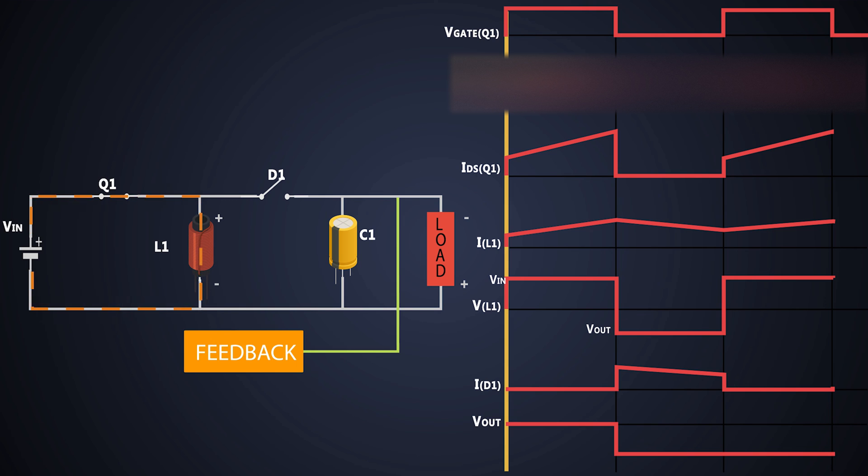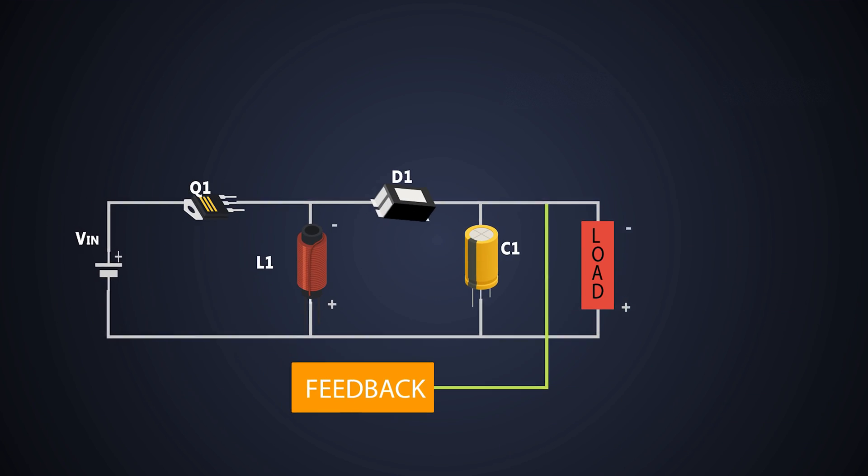So when the inductor gets charged from the supply, that time the capacitor provides the power to the load. So the load doesn't get affected in either of these cycles. So when the MOSFET is off, inductor provides power to the load. And when the MOSFET is turned on, the capacitor provides power to the load. And that's how a buck-boost converter works.